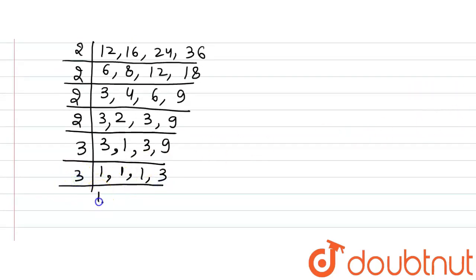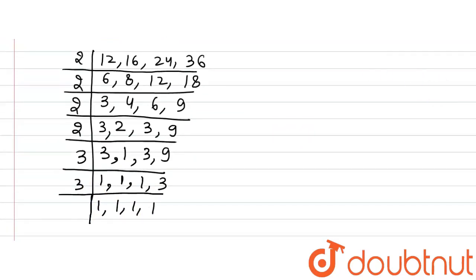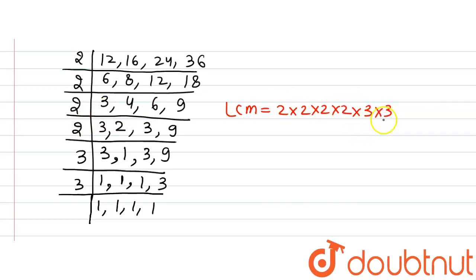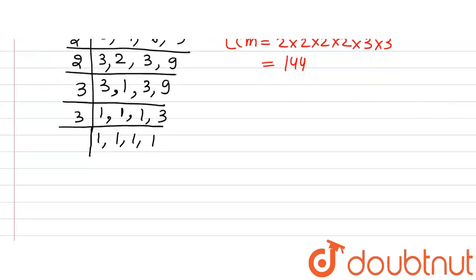Dividing by 3 again, since 3 remains, we get 1, 1, 1, and 1 — the LCM is now complete. So the LCM is the product of all the divisors: 2×2×2×2×3×3 = 9×2=18, ×2=36, ×2=72, ×2=144. So the LCM is 144, and the required number will be 7 more than the LCM.